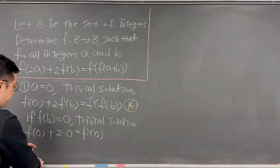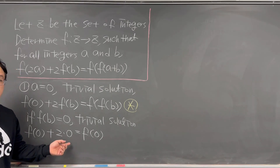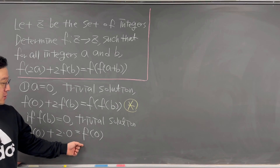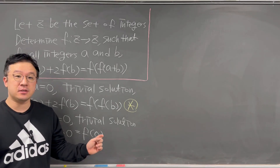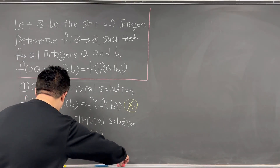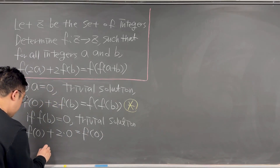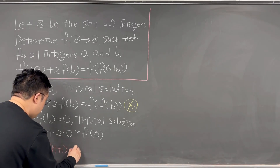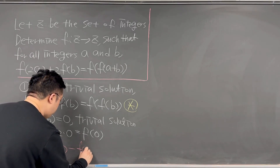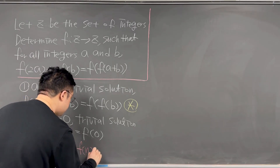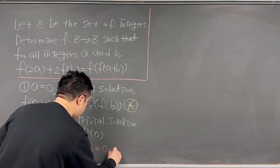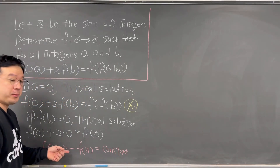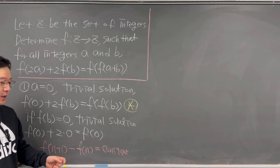So from this, we need to prove that f of x has to be a linear function. In order for us to say f of x is a linear function, then we need to show that f of n plus 1 minus f of n needs to be a constant. And this will be what we'll be working on from now.